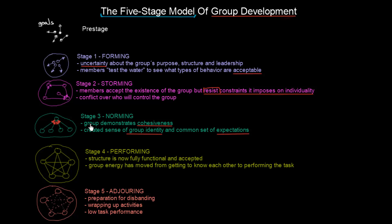The fourth stage is a sort of peak — it's called the performing stage. The structure is now fully functional and accepted. Not just functional, but the members of the group are accepting it. Group energy has moved from getting to know each other, which happened throughout all the previous stages, to now focusing on performing the task they are given.